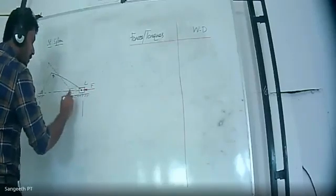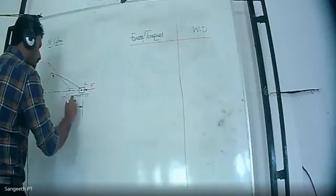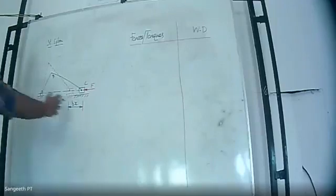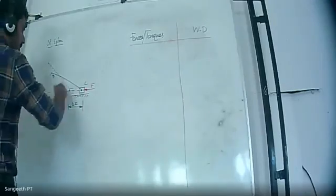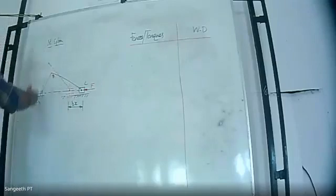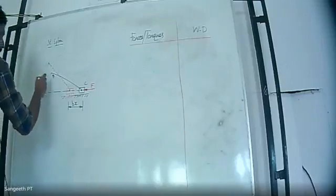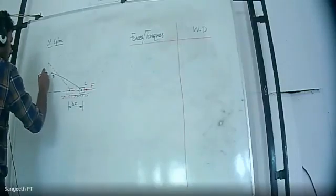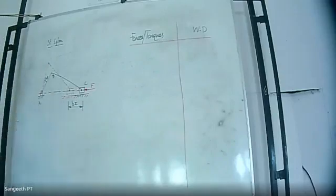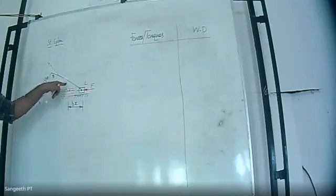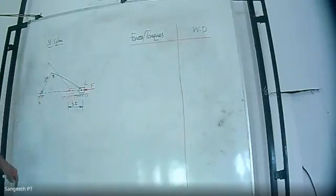Let the value of virtual displacement be delta x. If the slider is having a linear displacement delta x, then the crank should be having a corresponding angular displacement. Let the angular displacement value be delta theta. So delta x is the virtual displacement of the slider, and delta theta is the virtual angular displacement of the crank.